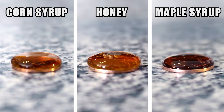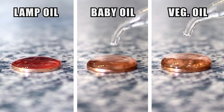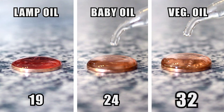Next are the syrups. Corn syrup took 22 drops, honey 25, and maple syrup 20. And finally we have a few more oils. Lamp oil was 19 drops, baby oil was 24, and vegetable oil was 32.